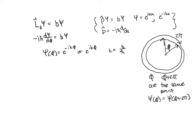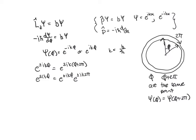So I have to make sure that psi at phi is equal to psi at phi plus 2 pi. Taking psi at phi, e to the plus or minus ik phi has to equal e to the plus or minus ik times (phi plus 2 pi). I can write this as e to the plus or minus ik phi times e to the plus or minus ik times 2 pi, using the rule that e to the (a+b) equals e to the a times e to the b. So both sides share the same factor, leaving 1 equals e to the plus or minus ik 2 pi.